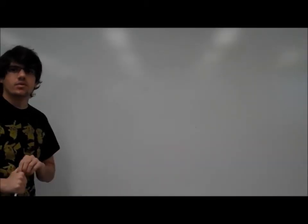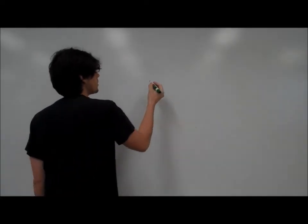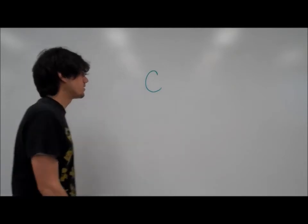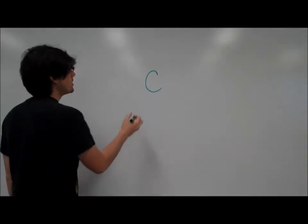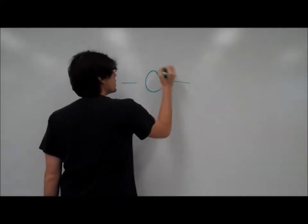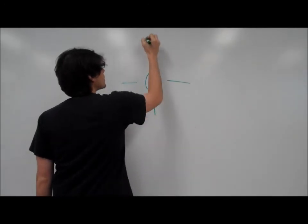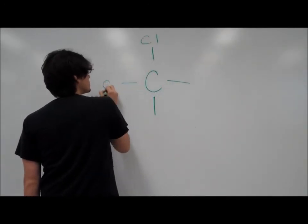Now that we've figured out the number of bonding pairs, we can begin creating our Lewis structure. Our central atom will be carbon. This is the least electronegative. We then have four chlorines connected to our central atom.